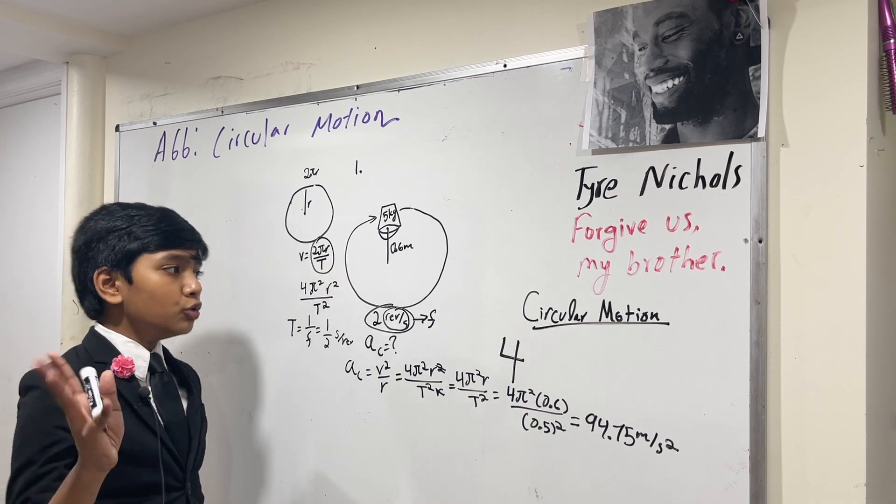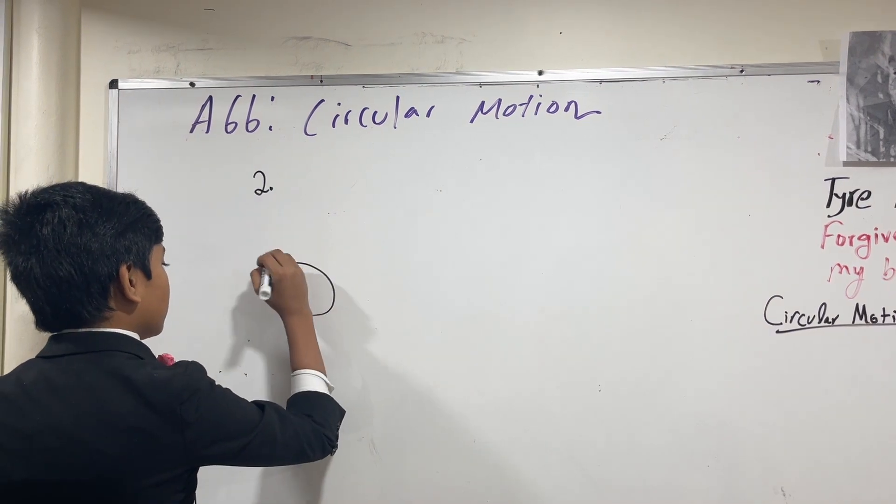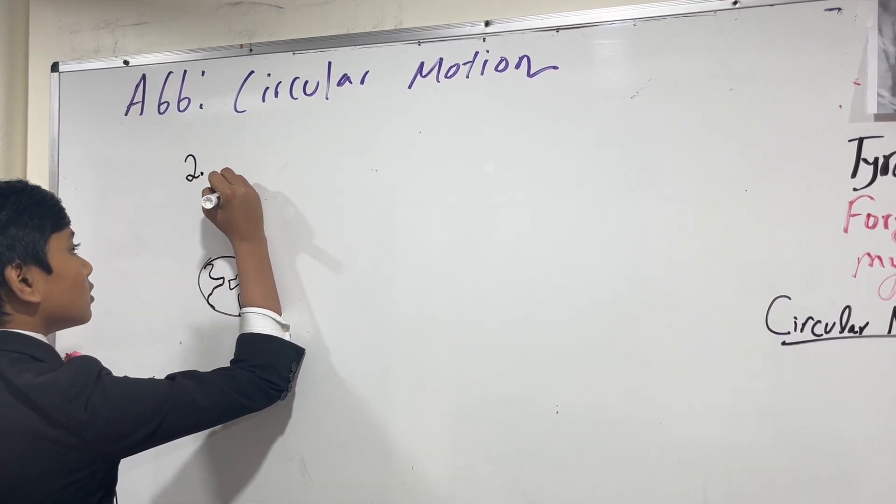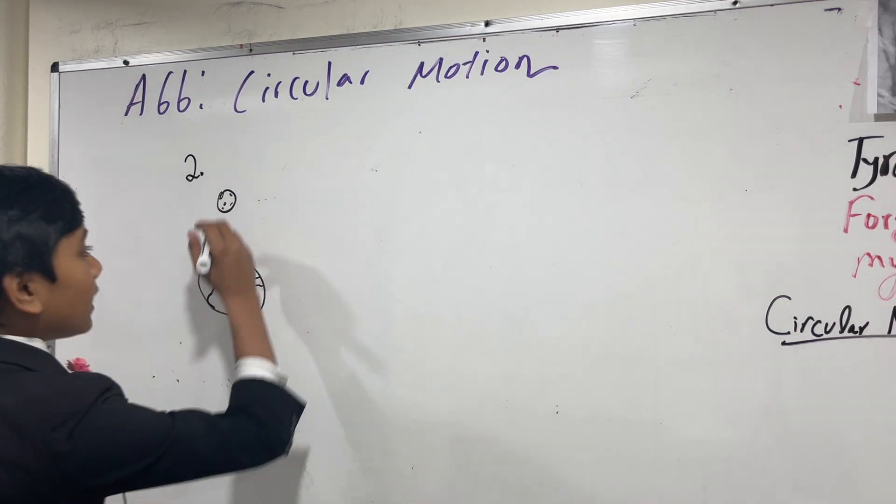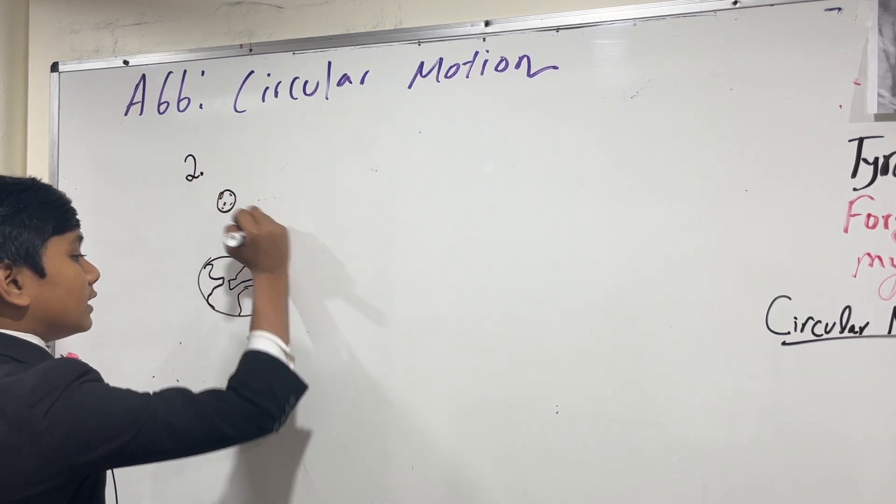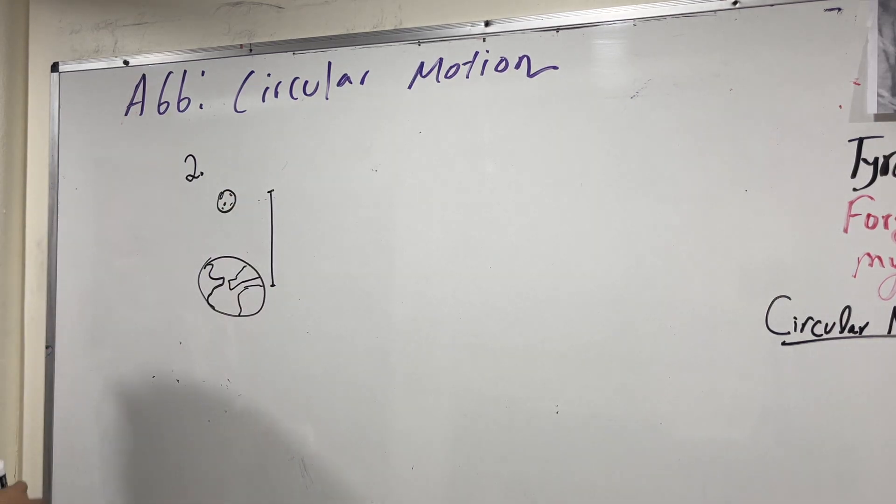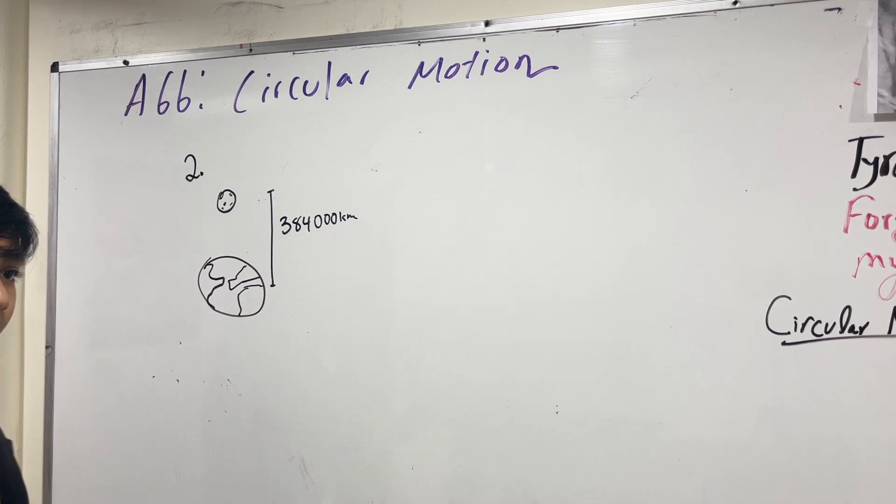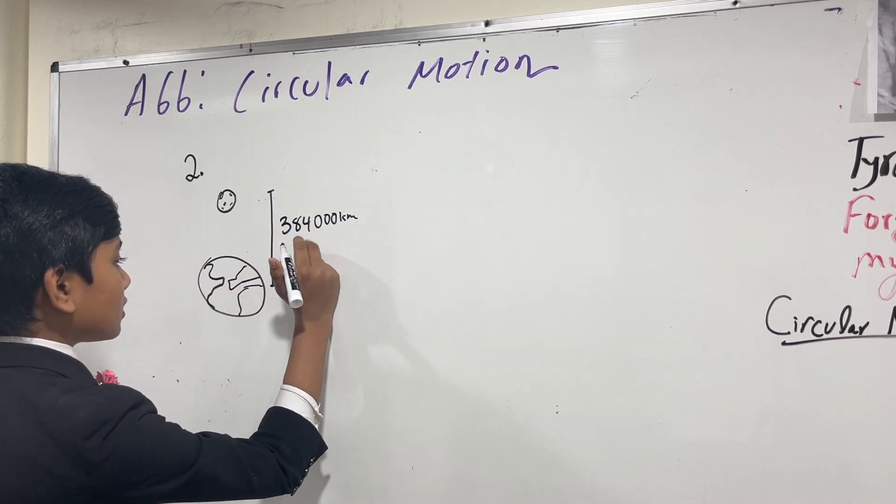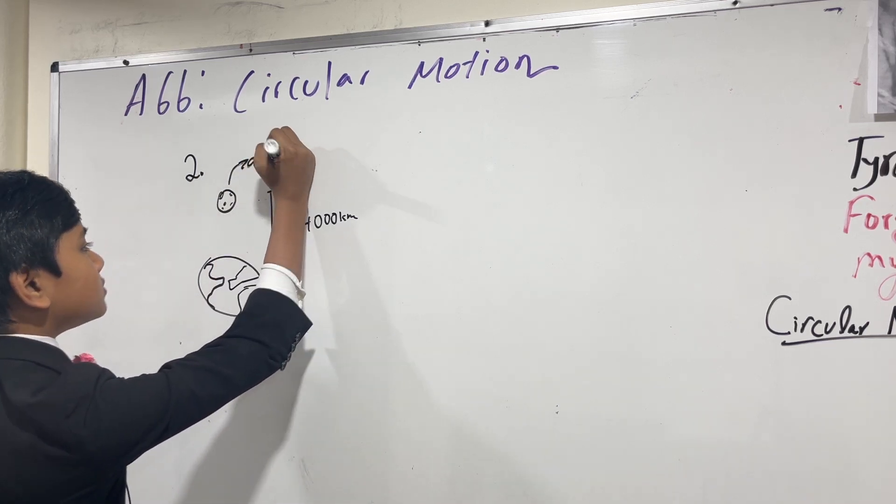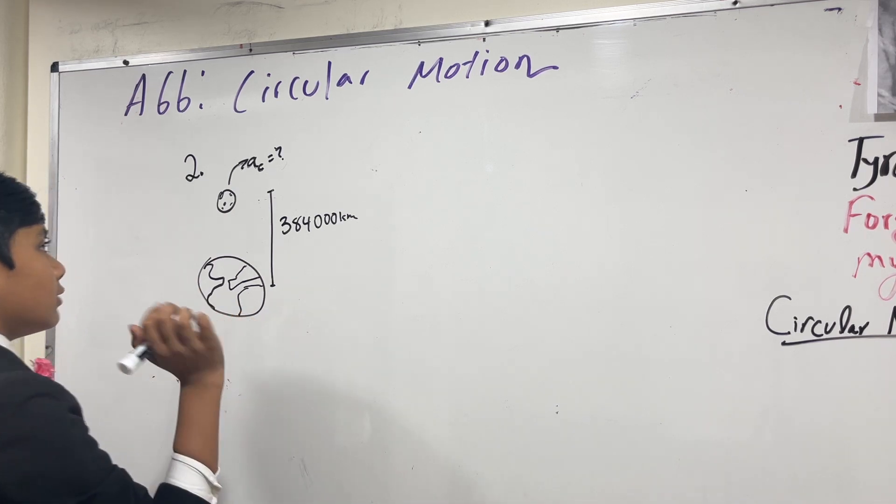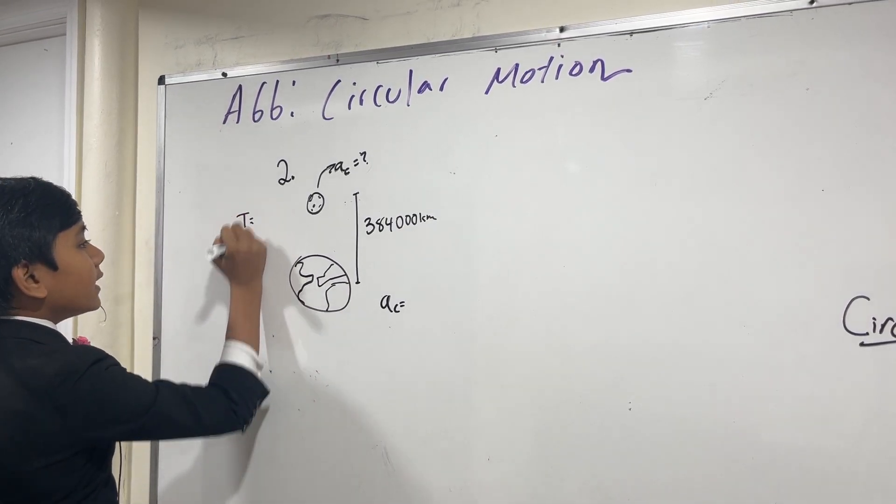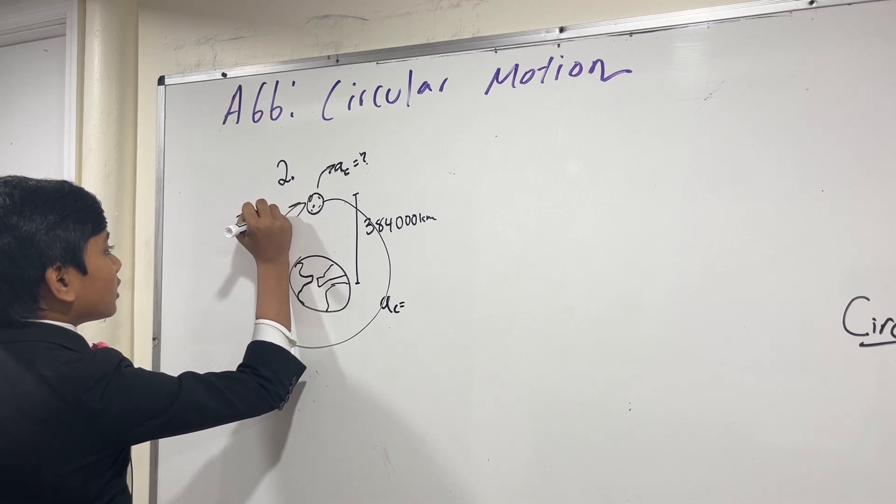Let's go to the moon. We have the earth here. Beautiful earth. That's our earth. And now we have the moon. Here's our moon. Given that the distance from the center of the earth to the center of the moon is about 384,000 kilometers. Find the centripetal acceleration of the moon. The period of the moon, one orbit of the moon, is about 27.3 days.